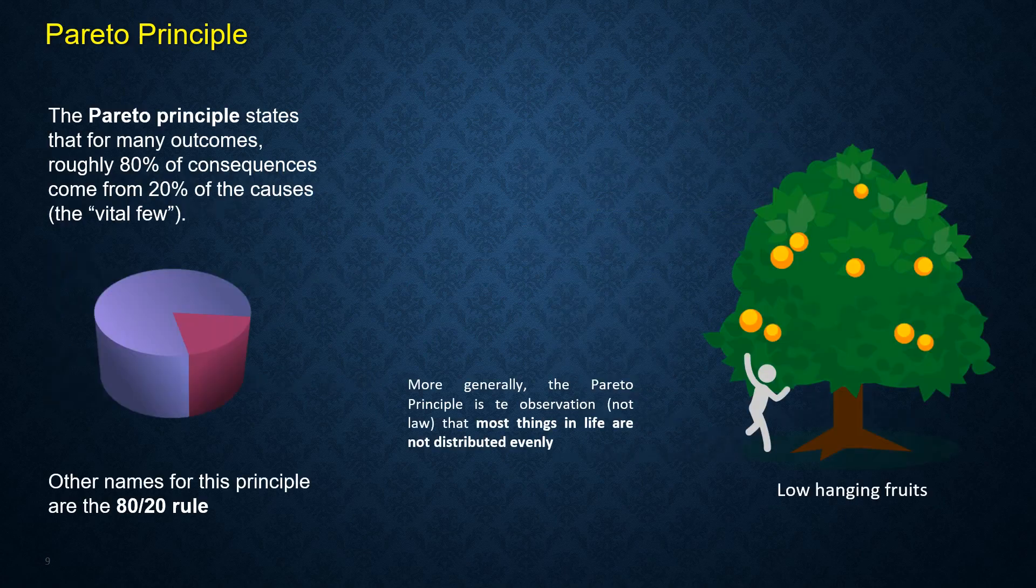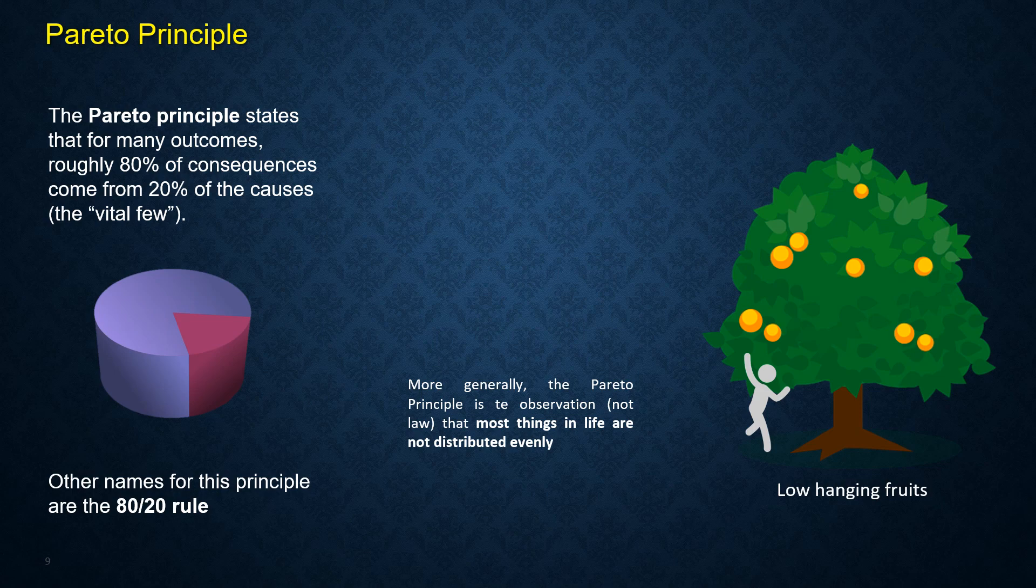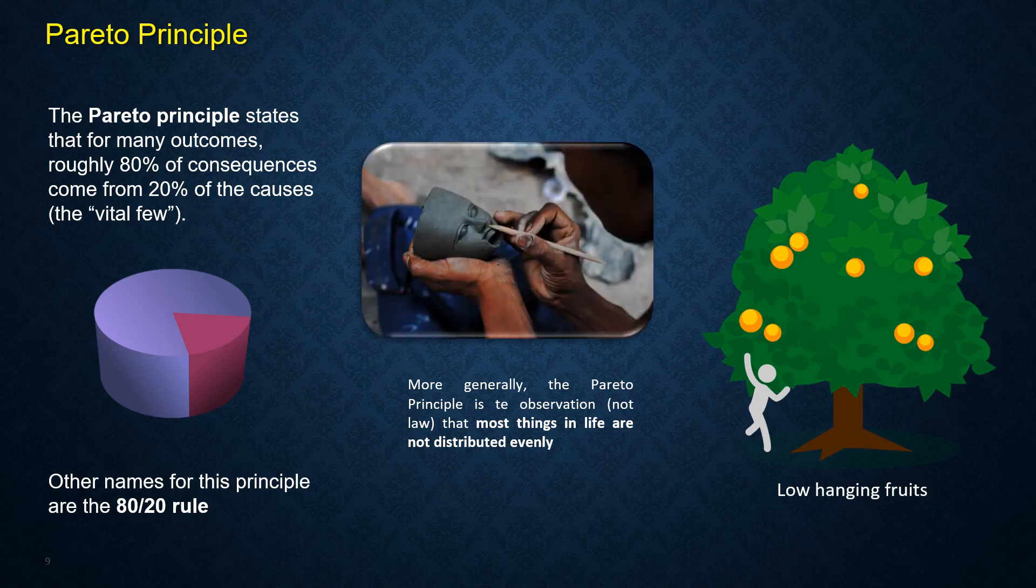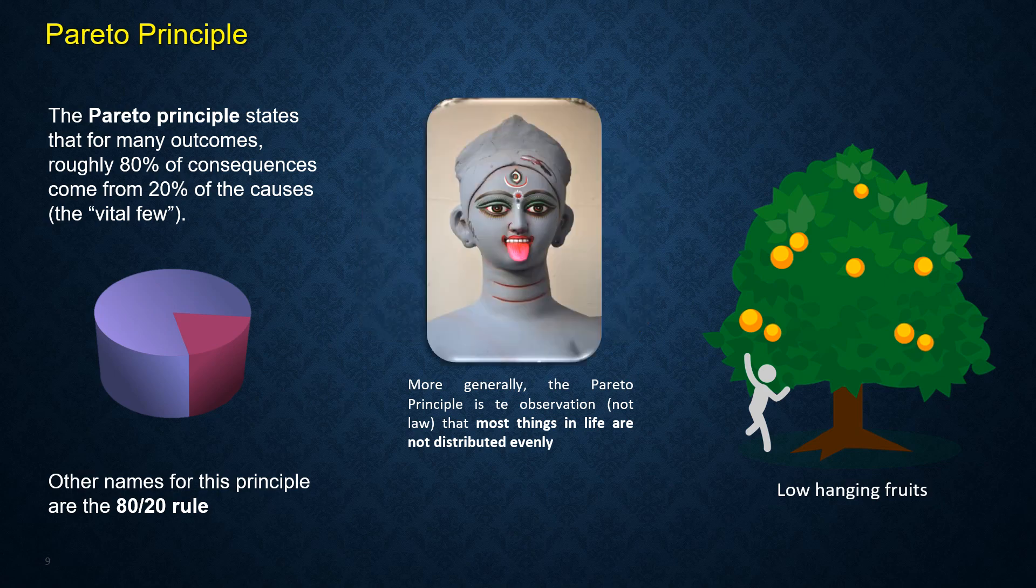The Pareto Principle states that for many outcomes, roughly 80% of consequences come from 20% of the causes. Think about a sculpture artist or a painter.